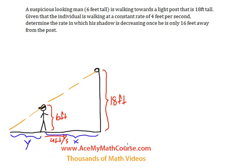The easiest way to set up this problem is through the use of similar triangles. What do we know? We know that dx/dt equals negative 4, and it's negative because the x value is decreasing since he is walking towards the light post.